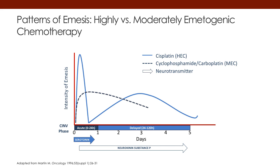If you look at the dotted curve, that's cyclophosphamide. Cyclophosphamide usually comes on a little slower, peaks at hours 12 to 24, and then tails off shortly after that. Acute emesis is driven by the stimulation of serotonin, while the delayed phase is related more to the activation of substance P.